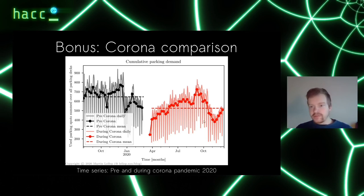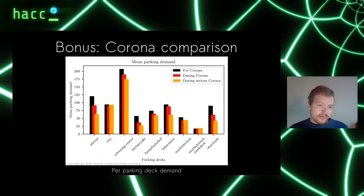There are also times where the number of parking spots decreased significantly, for instance right when the Corona crisis started in April, and now the second wave in October, November, December. It is visible that the parking demand decreased a lot. I went one step further and wanted to know the differences between pre-Corona and during Corona also for each of the parking decks. It's now not the normalized parking demand but the absolute parking demand, so you can see the absolute numbers.